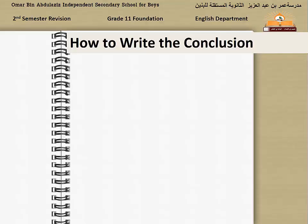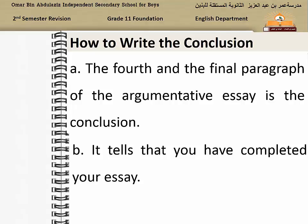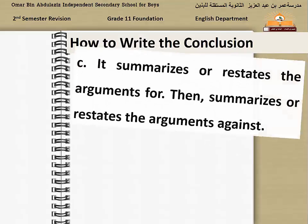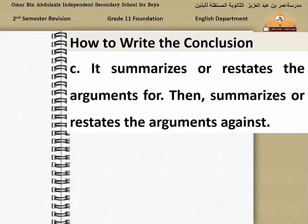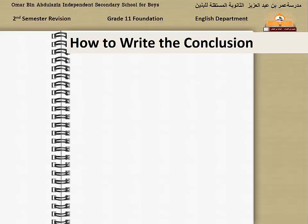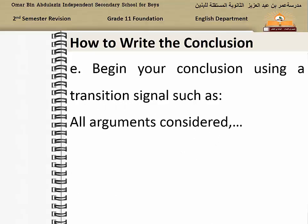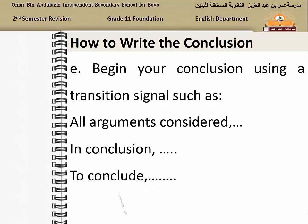How to write the conclusion: the fourth and final paragraph of the argumentative essay is the conclusion. It tells the reader that you have completed your essay. It summarizes or restates the arguments for, then the arguments against. It concludes with a final comment on the subject, which should be balanced, not biased to any side. It is better to start the conclusion using a transition signal such as 'All arguments considered', 'In conclusion', 'To conclude', 'To sum up', and so on.